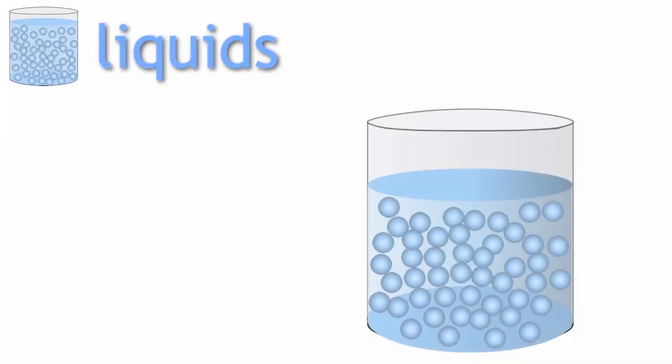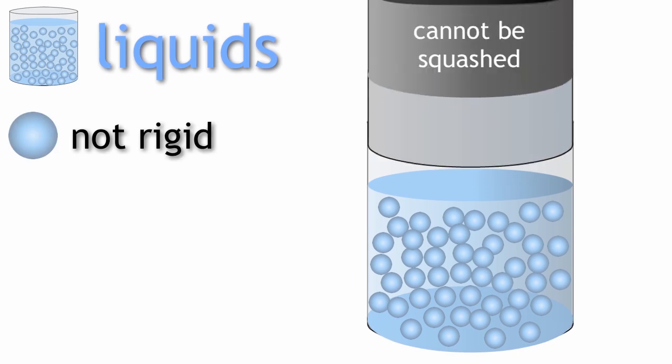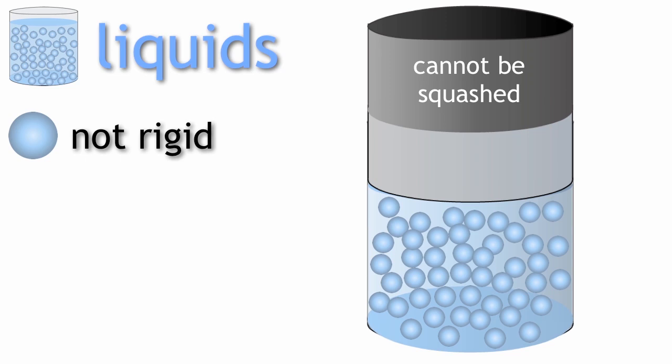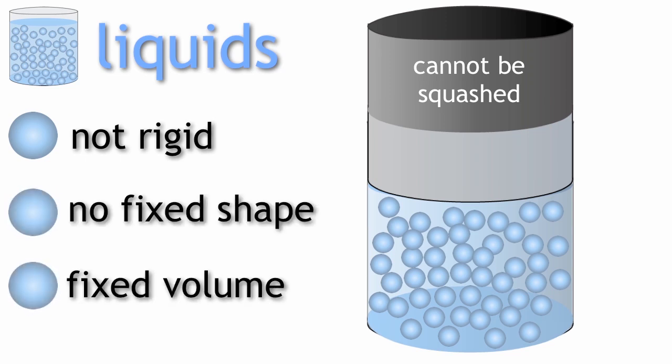So, liquids are not rigid, but because their particles are closely packed as in solids, they cannot be squashed or compressed. They do not have a fixed shape, but they do have a fixed volume.